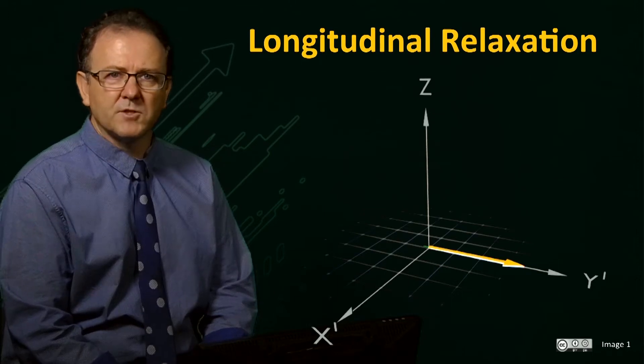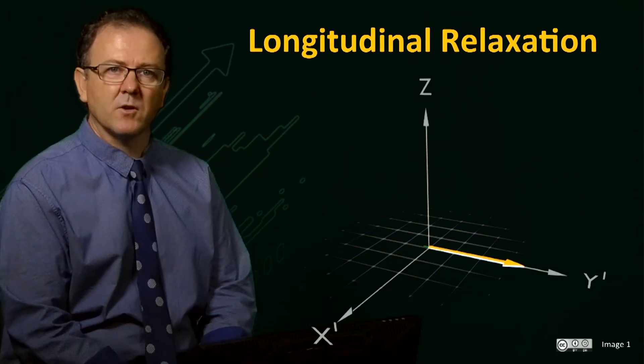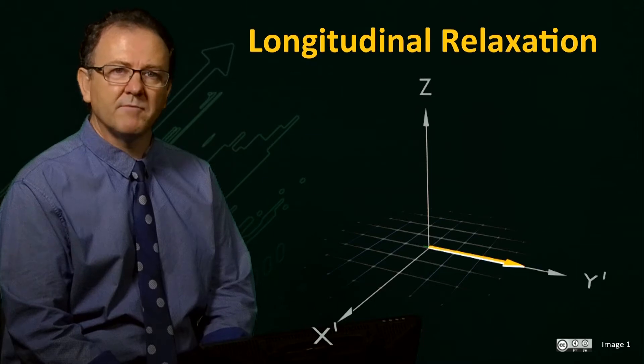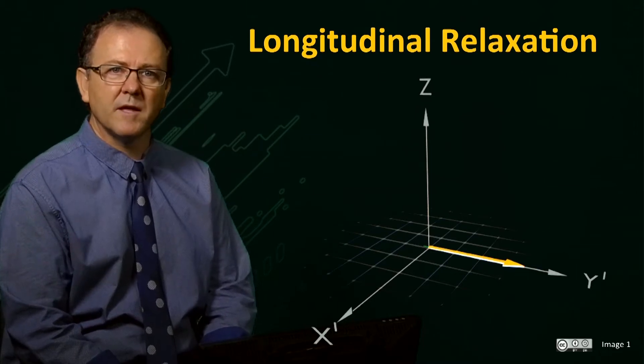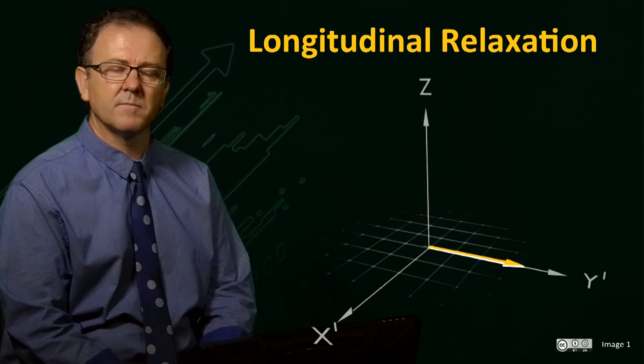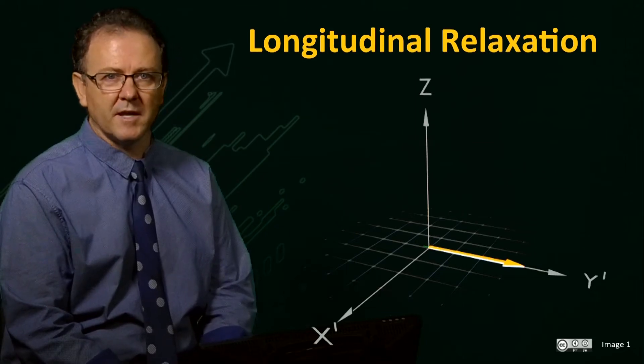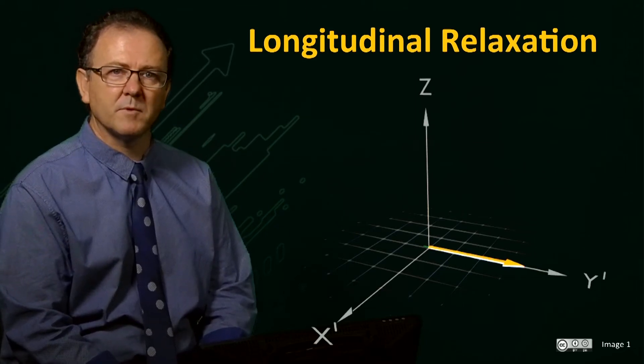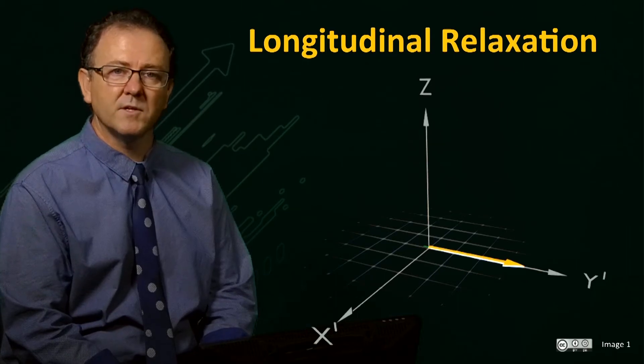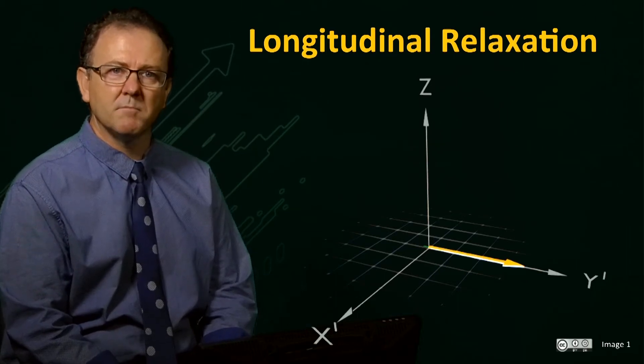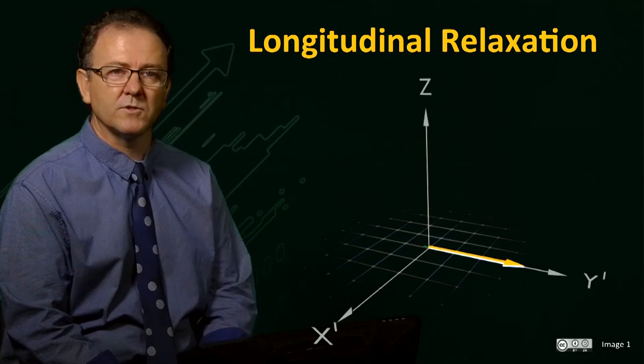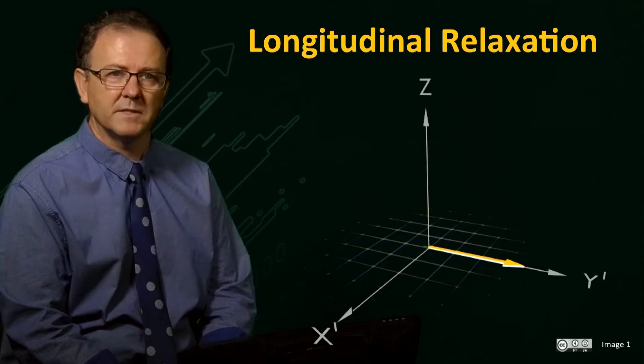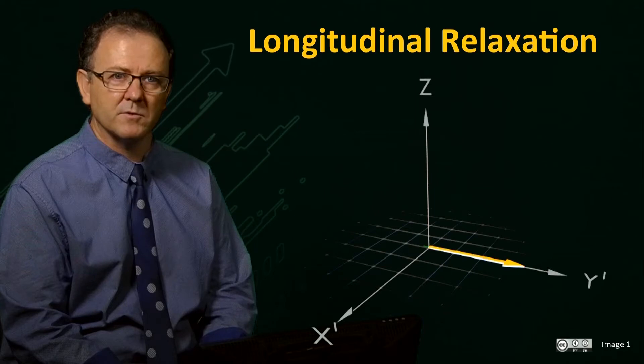We know that transverse magnetization de-phases following an RF pulse. Our vector animations have shown only their precession about the Z-axis during this process. However, just as net magnetization forms after a sample of spins is placed into a magnetic field, so the magnetization moments must realign along the direction of the applied field B0 after being disturbed by an RF pulse.